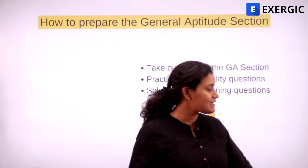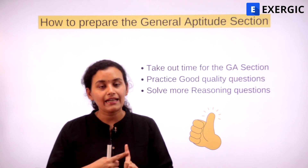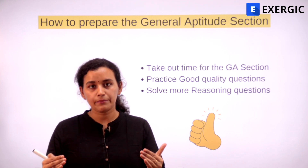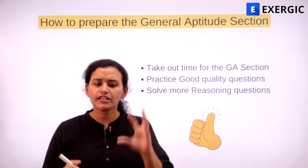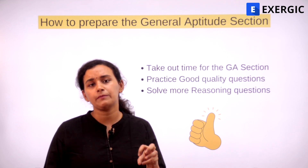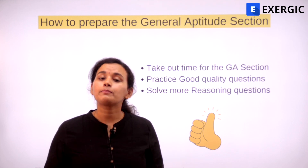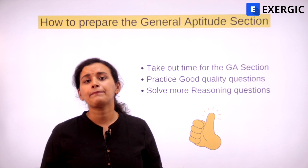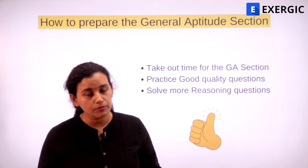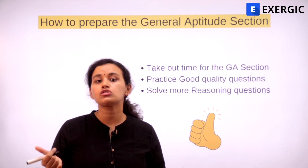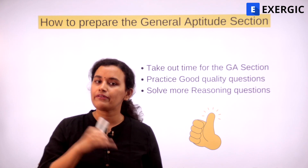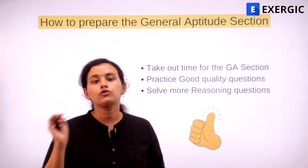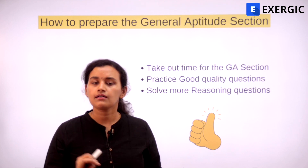To recap the three points: First, fix a time on a daily or weekly basis to practice general aptitude — this gives you a necessary break from technical preparation and ensures you take out at least five minutes every day. Second, practice from five to six years of previous year GATE papers across all branches. Also use the daily aptitude questions on our Telegram channel, YouTube community, and the 100-plus questions on Exergics' Facebook group — all links are in the description box.